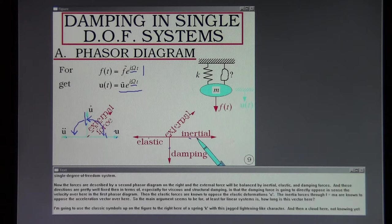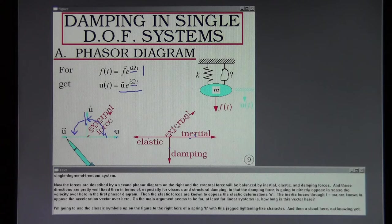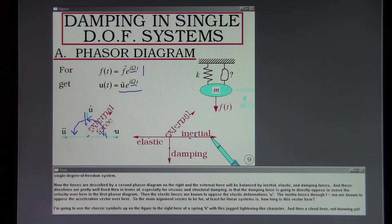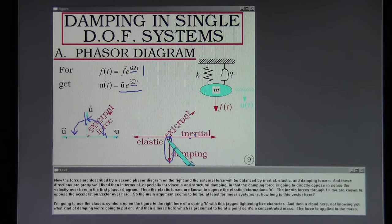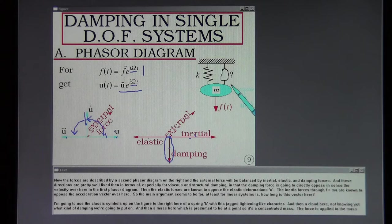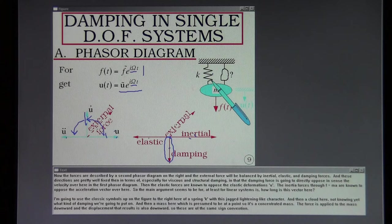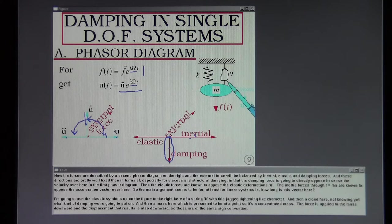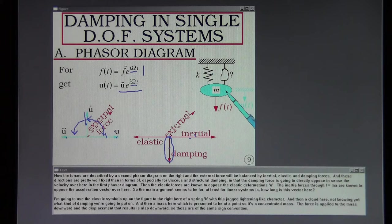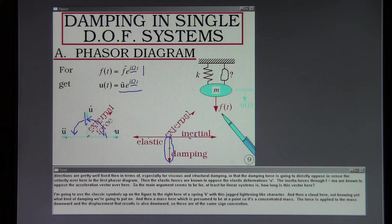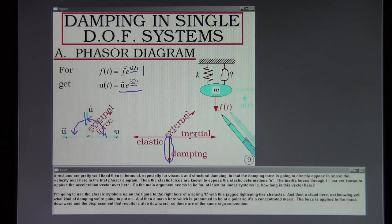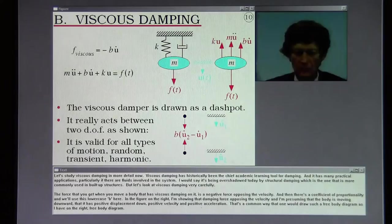Then the elastic forces are known to oppose the elastic deformations U. The inertia forces through F equals MA are known to oppose the acceleration vector over here. So the main argument seems to be for at least for linear systems is how long is this vector here? I'm going to use the classic symbols up on the figure to the right here of a spring K with this jagged lightning-like character. And then a cloud here not knowing yet what kind of damping we're going to put on. And then a mass here which is presumed to be at a point. So it's a concentrated mass. The force is applied to the mass downward and the displacement that results is also downward. So these are of the same sign convention.